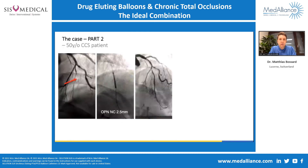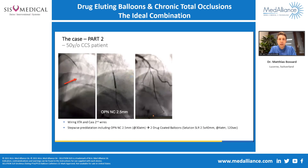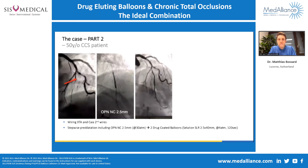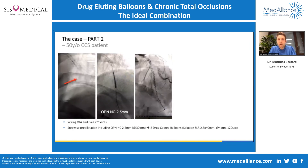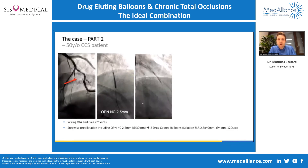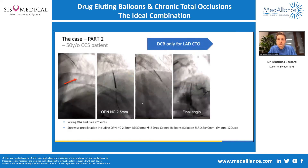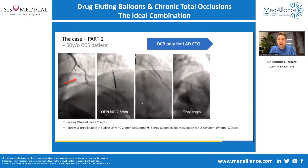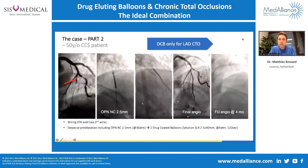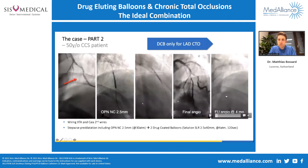Coming back to the case: we decided early on to avoid a stent because this is a very long lesion, and by implanting a stent you would eliminate the option of CABG for this rather young patient down the road. Florian treated the patient very nicely with two drug-coated balloons and achieved a very nice result, as you can see on the final angiogram and on the four-month follow-up.